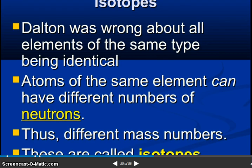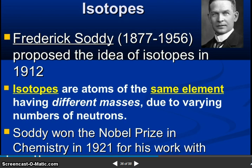Now isotopes. Dalton was wrong about all elements of the same types being identical. Atoms of the same elements can have different numbers of neutrons, thus different mass numbers. These are called isotopes.